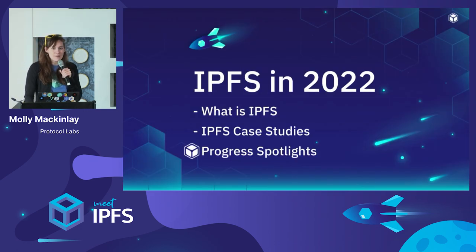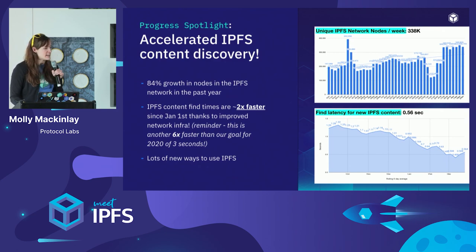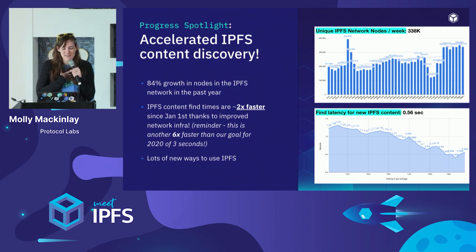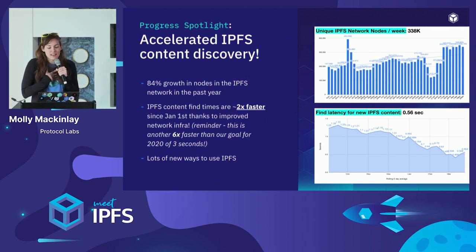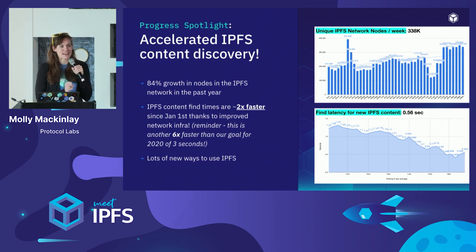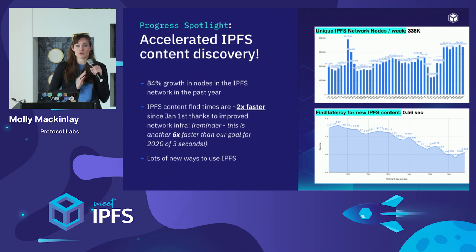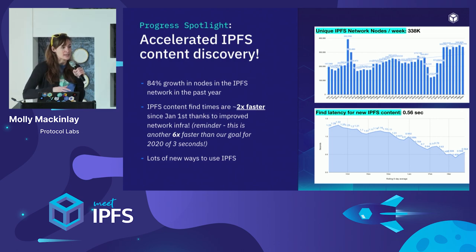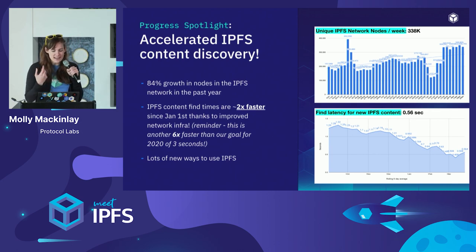To progress-spotlight a couple of things before I hand it off to Konstantin — there's some amazing work being done across the IPFS community. One exciting thing from the metrics: content discovery in IPFS is getting faster and faster. Back in 2020, I think we started at something like over 30 seconds to find content in the IPFS DHT, which was infeasible. Within less than six months, we brought that down to three seconds. Now we're down to about half a second — that's a 40x improvement, and 2x faster just since the beginning of this year. Significant progress thanks to the work the network infrastructure teams are doing to accelerate content discovery.